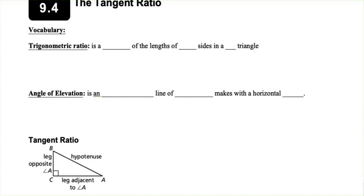Today we're going to start talking about the tangent ratio. A trigonometric ratio is a ratio of the two sides in a right triangle.